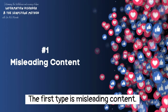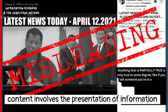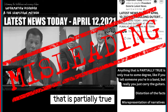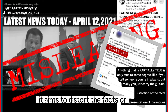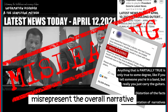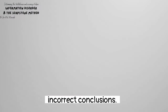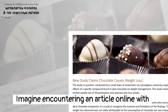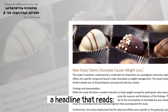The first type is misleading content. Misleading content involves the presentation of information that is partially true or has been manipulated to give a false impression. It aims to distort the facts or misrepresent the overall narrative, leading the audience to draw incorrect conclusions.